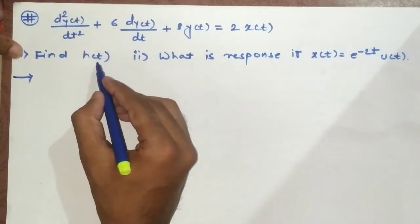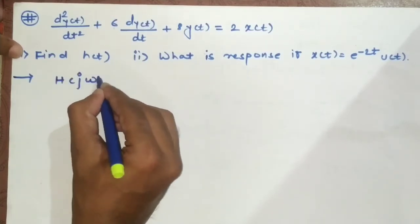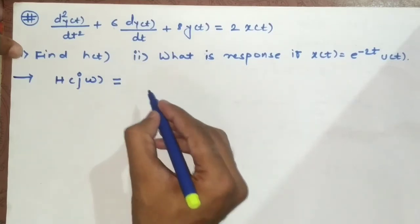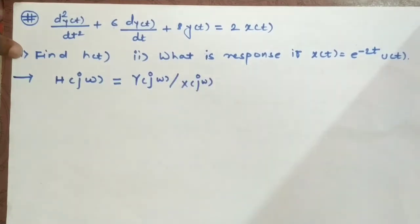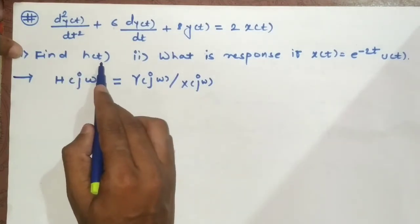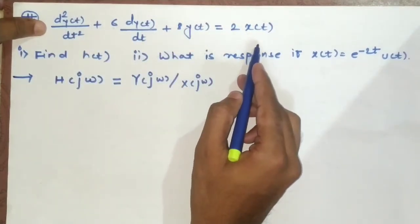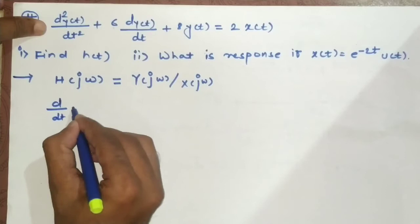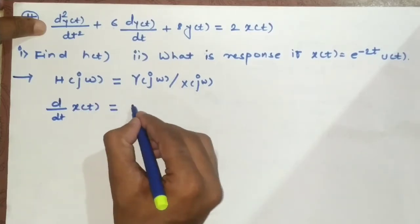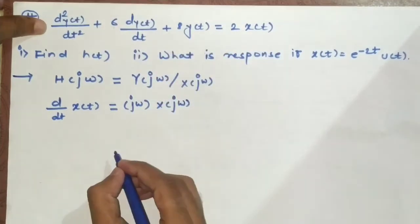To find H(t) in the time domain, we can use the equation that the impulse response in frequency domain is the ratio of output by input. Once we obtain H(jω), we can take its inverse Fourier transform to get H(t). In order to simplify this, we will apply the Fourier transform to the given equation. By using the time differentiation property, differentiation of any input signal equals multiplication by jω.